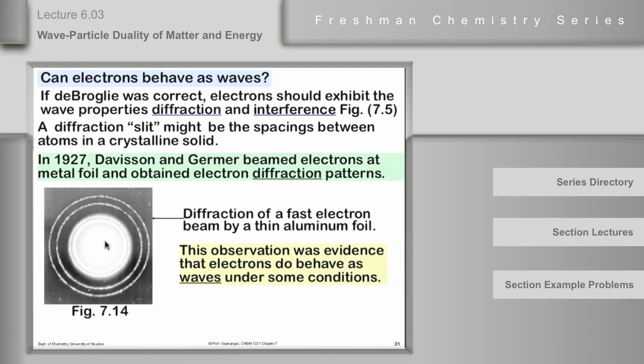And in 1927, they published a paper that showed that electron beams are diffracted by aluminum foil. And the electrons, therefore, are undergoing interference, positive or constructive and destructive interference. And that produces these rings. And from that, de Broglie's whole idea was solidified, if you will.